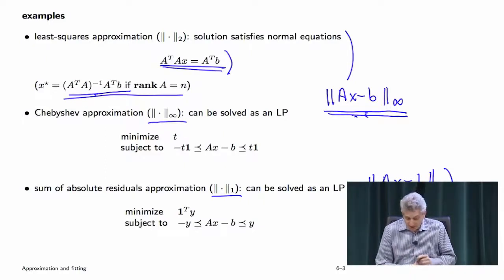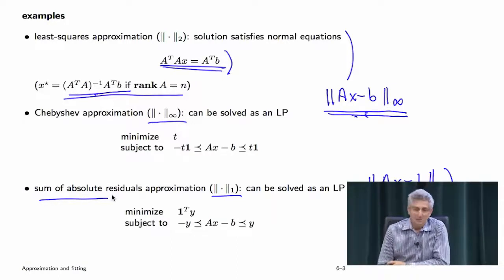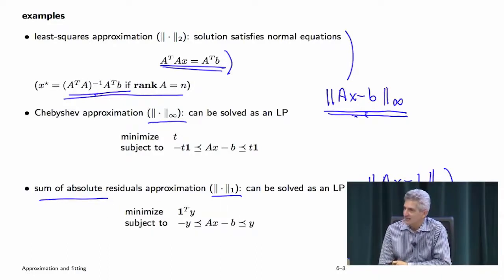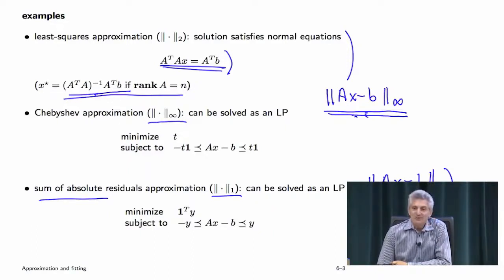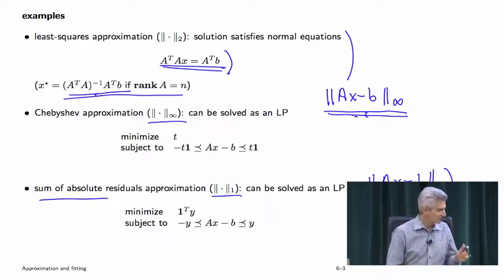The one-norm problem is an example of what we'll see later as a robust estimator. The properties are shocking, and things like that form the basis of a lot of modern statistics, machine learning, and other things. These are not new ideas — Chebyshev approximation traces back to the 1930s and 40s, likely with a Russian name attached to it from Moscow State University. They've just kind of languished in obscurity until the last decade. Now they're the height of fashion.